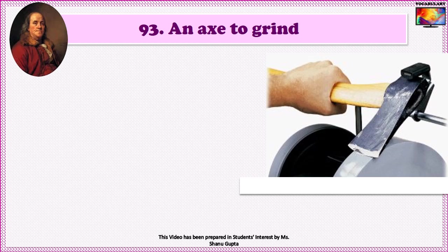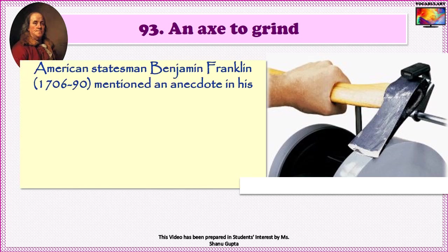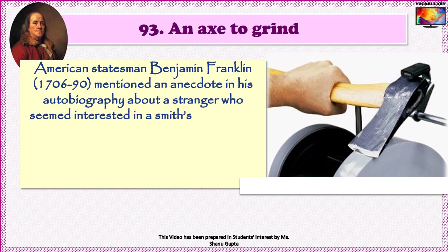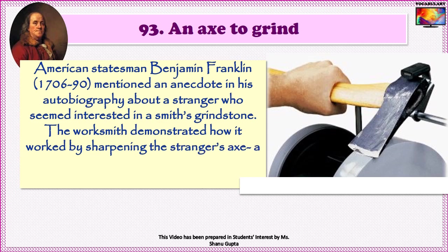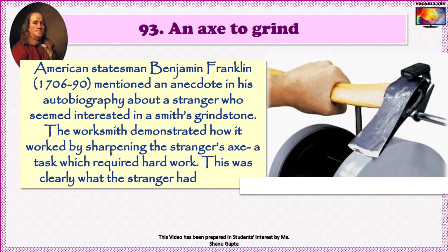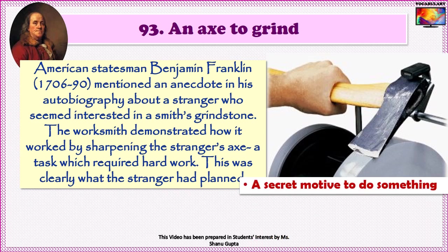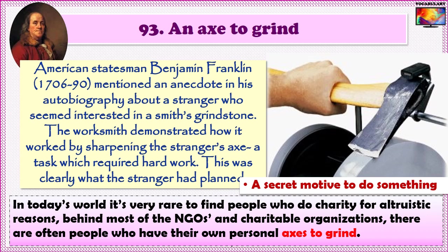Idiom No. 93 is 'An axe to grind.' The phrase first finds mention in American statesman Benjamin Franklin's autobiography, where he mentioned an anecdote about a stranger who seemed interested in a smith's grindstone. The worksmith demonstrated how it worked by sharpening the stranger's axe — a task which required hard work — and this was clearly what the stranger had planned. So, if someone has an axe to grind, he has a secret motive to do something. An example: 'In today's world, it is very rare to find people who do charity for altruistic reasons. Behind most NGOs and charitable organizations, there are often people who have their own personal axe to grind.'